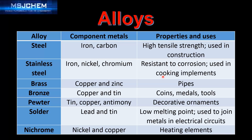Stainless steel is therefore used in cooking implements such as saucepans. Brass is composed of copper and zinc and it's used in pipes. Bronze is composed of copper and tin, and it's used in coins, medals, and tools.